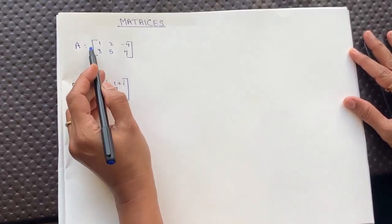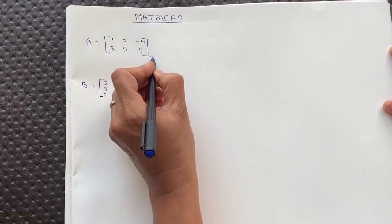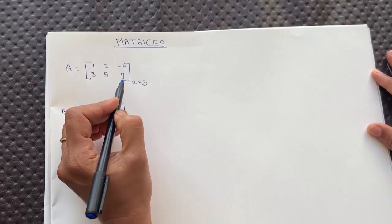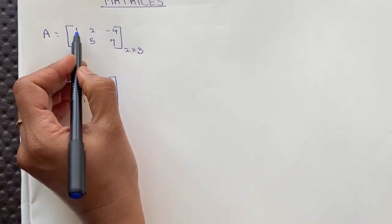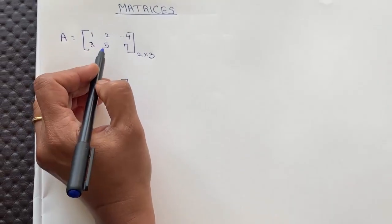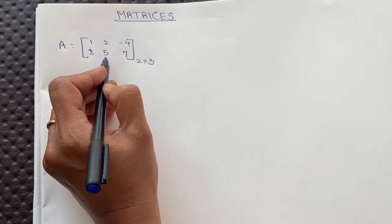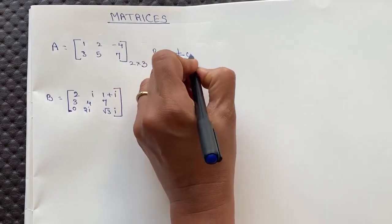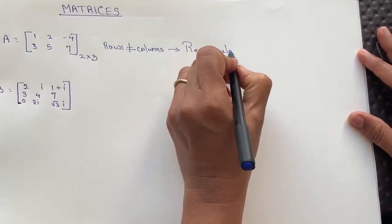Here, matrix A has two rows and three columns. Therefore we write the order as 2 by 3. The elements are Aij where i denotes rows and j denotes columns. So A11, the element in first row and first column, equals 1. A22, the element in second row and second column, equals 5. Here the number of rows and number of columns are not equal — rows are not equal to columns — therefore this is an example of a rectangular matrix.